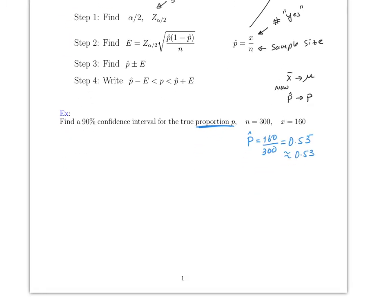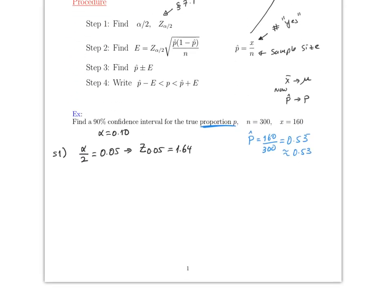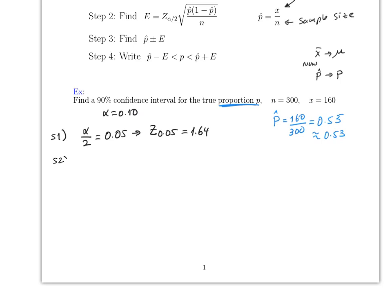Once you find that, since you want a 90, that means the alpha has to be 0.10. So for step one, remember it's alpha divided by 2, which will be 0.05. Then we need z of 0.05, which equals 1.64, right here.